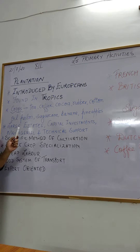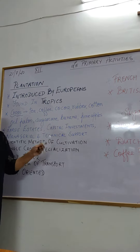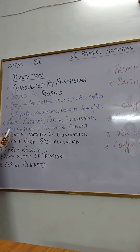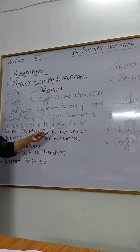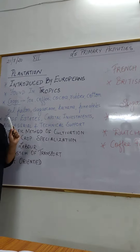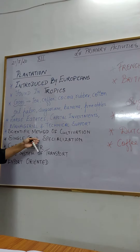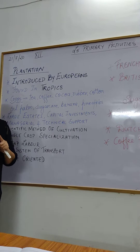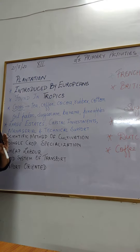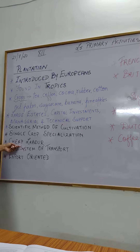These were large estates or large areas of land with high capital investment - a lot of money was invested in it. Managerial and technical support was also there, and scientific methods of cultivation were used. Then there is single crop specialization - only one crop can be grown at a time, and it takes around 3 to 5 years for the product to come to market.